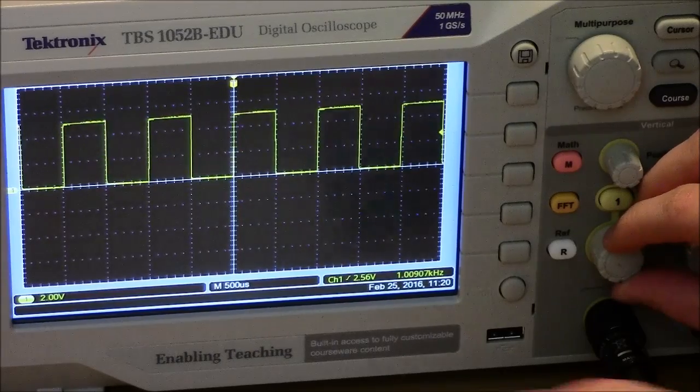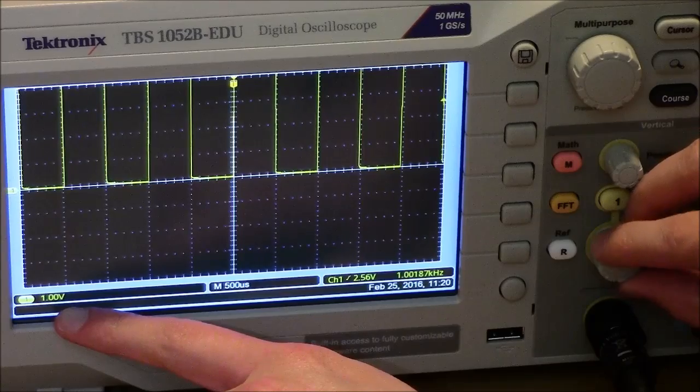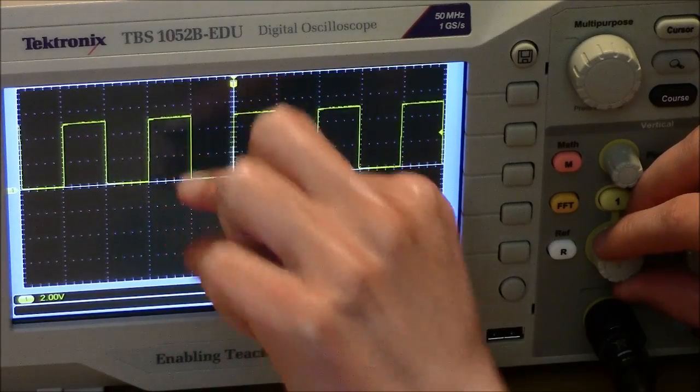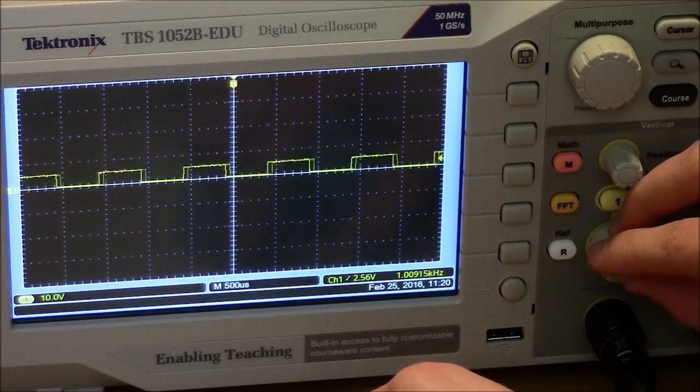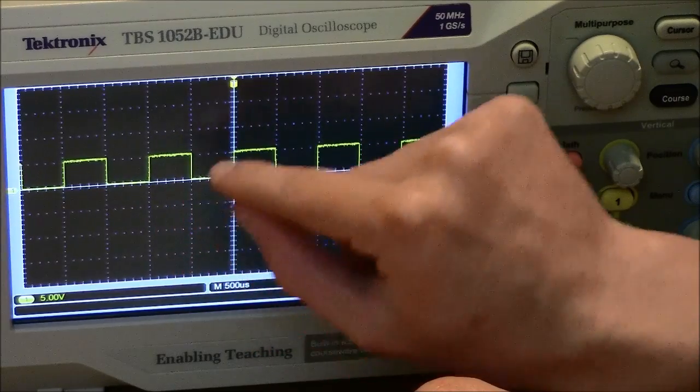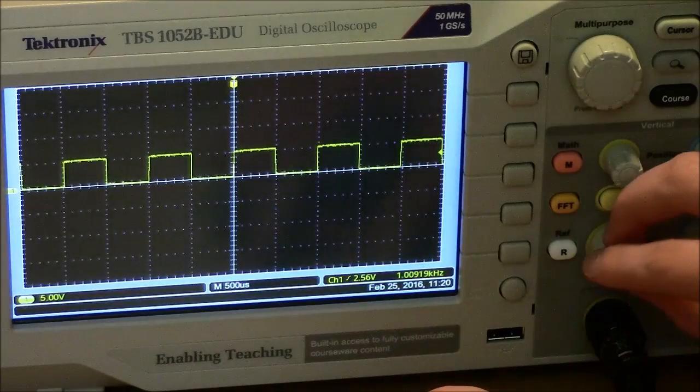As I turn this knob, you'll notice that this number here changes and what this number means is how much each one of these boxes represents. So at this point the wave is one box tall, so it has an amplitude of five volts.